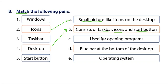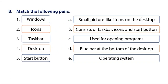Next: this is used for opening a program — we have to use the start button to open a program. Next: the blue bar at the bottom of the desktop where you can see the time and date — we call this the taskbar. The last one: this is the program that controls all the parts of the computer — we call this Windows. Windows 7, 8, 9, and 10. What Windows are you using? I'm using Windows 10.